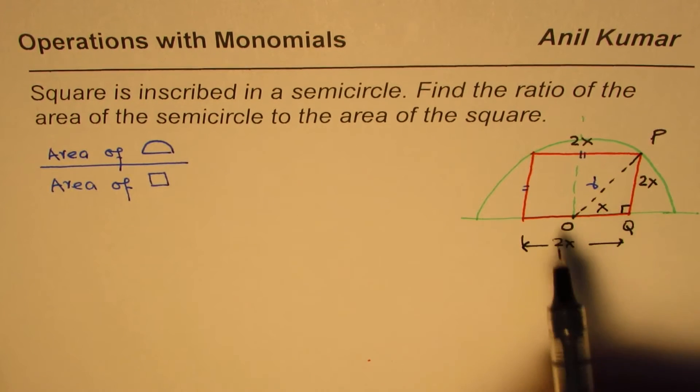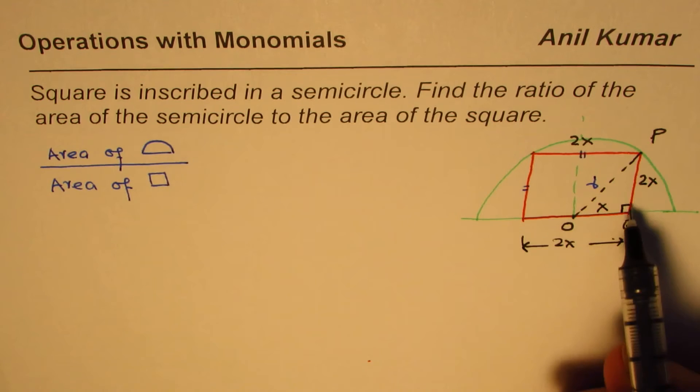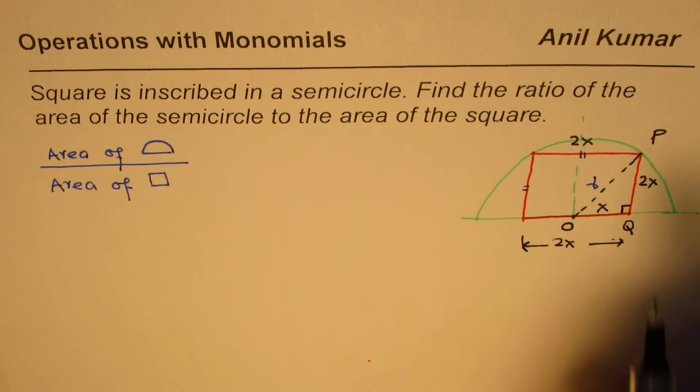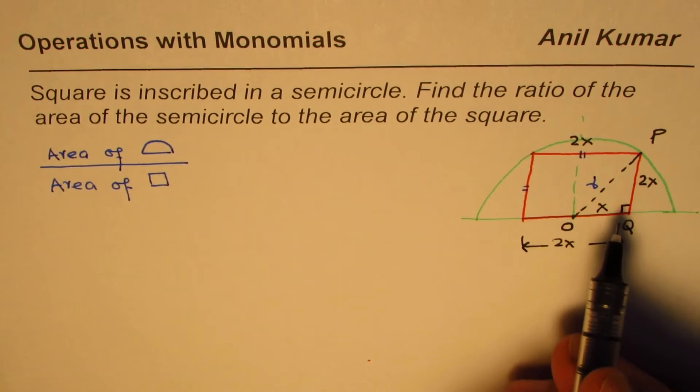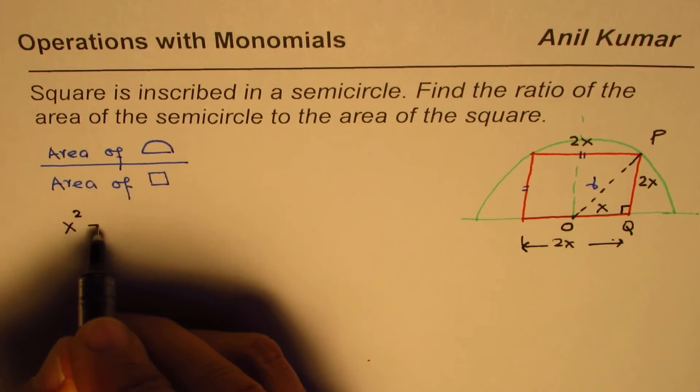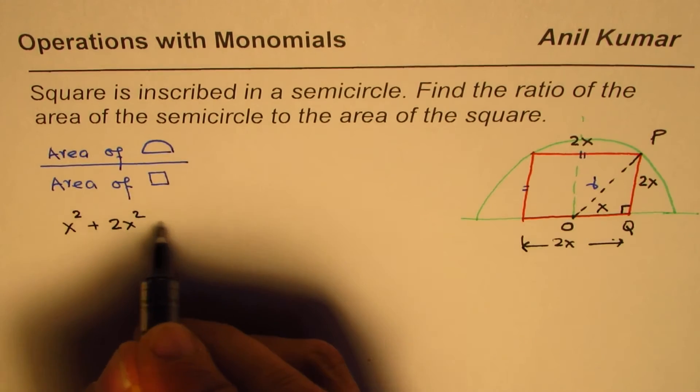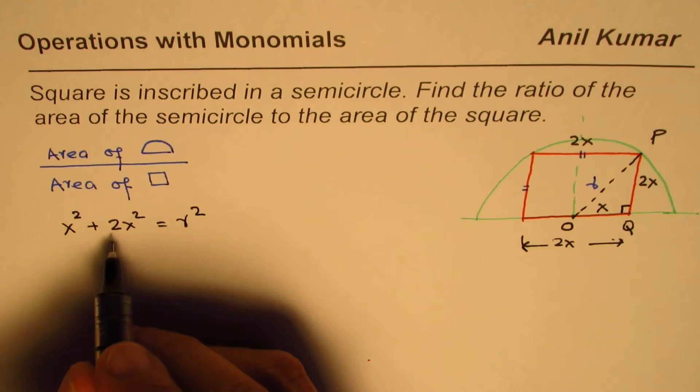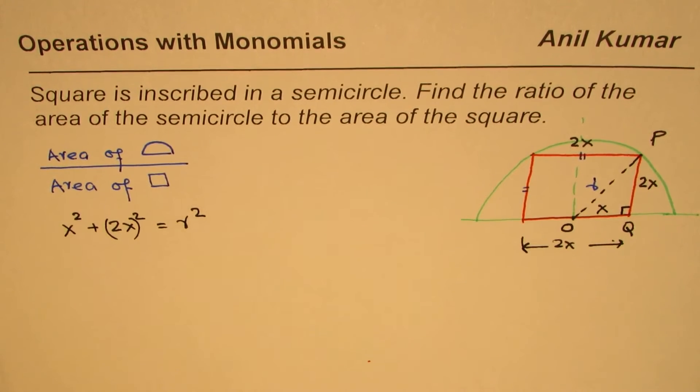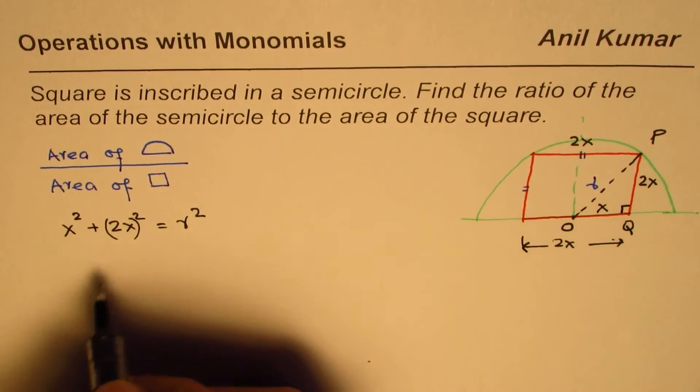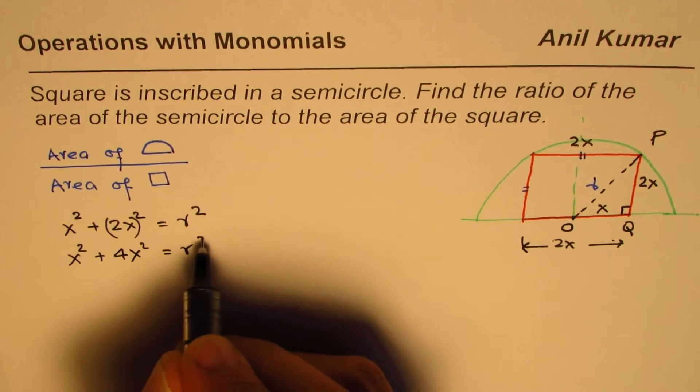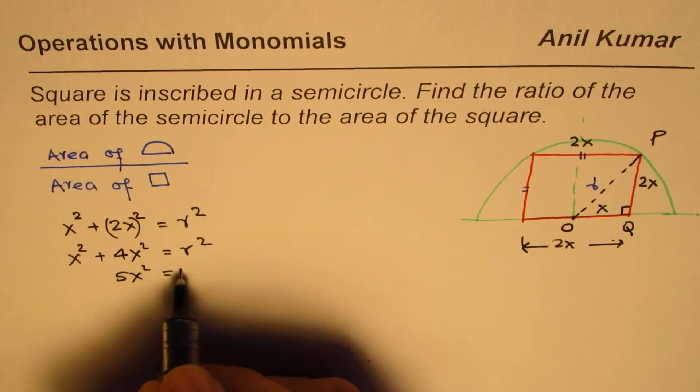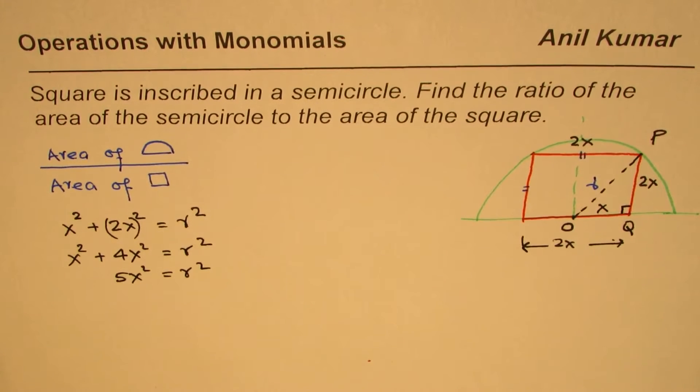So we have assumed this to be 2x, each side of the square is 2x, so this is half, so I'll write x for it. So OQ is x, PQ is 2x. Now with this we can apply the Pythagorean theorem and relate x with R. So what we have here is x² + (2x)² = R², and that gives us x² + 4x² = R². That is 5x² = R².